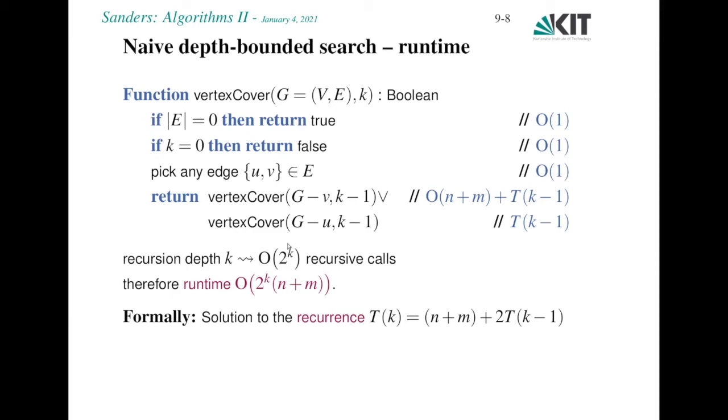We have a recursion depth of k here. Because with each recursive call, k is reduced by 1. So you have, in the worst case, a complete binary tree of recursive calls, consisting of something like 2 to the k calls. And each of them takes linear time. So we would have a running time of order 2 to the k times n plus m, which is already within the framework of fixed parameter tractable.